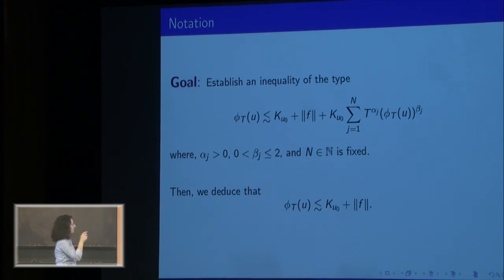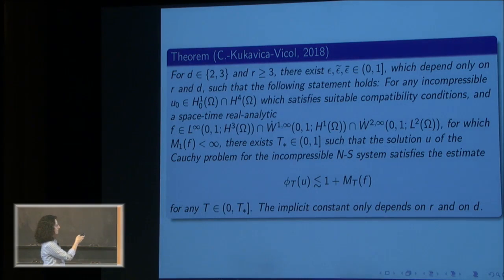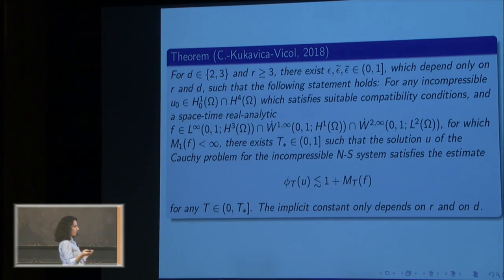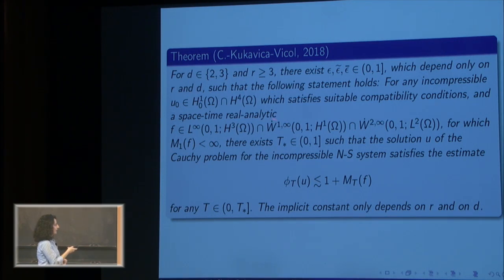Here is our main result. For dimensions two and three, if we start with an incompressible initial data with finite Sobolev regularity, and if we require it to satisfy some compatibility conditions on the boundary, and if we have a real analytic body force F, then the solution u of the Cauchy problem for Navier-Stokes satisfies the analyticity bounds that I just introduced, having an upper bound that depends on the initial data and the analytic norm of F.